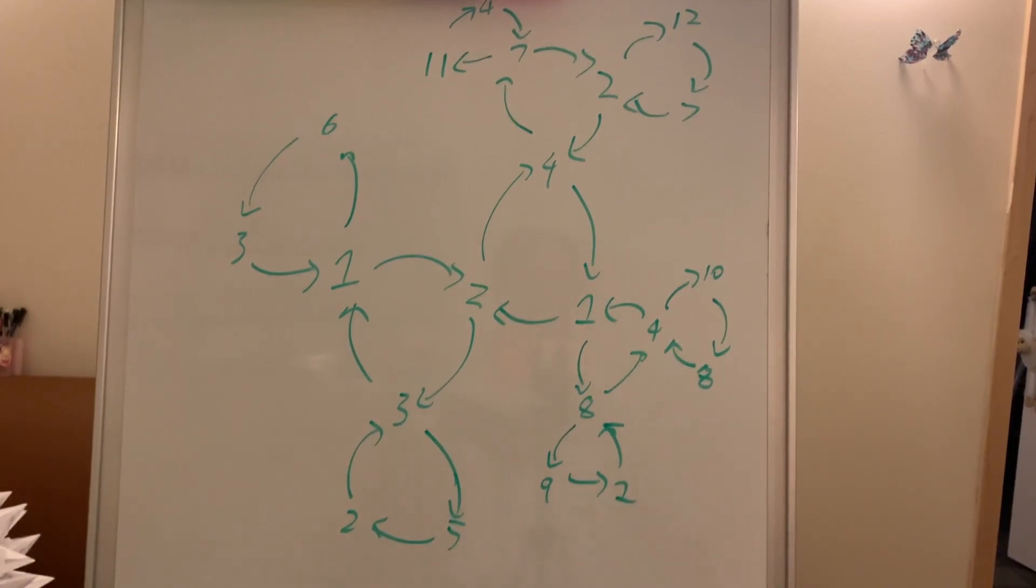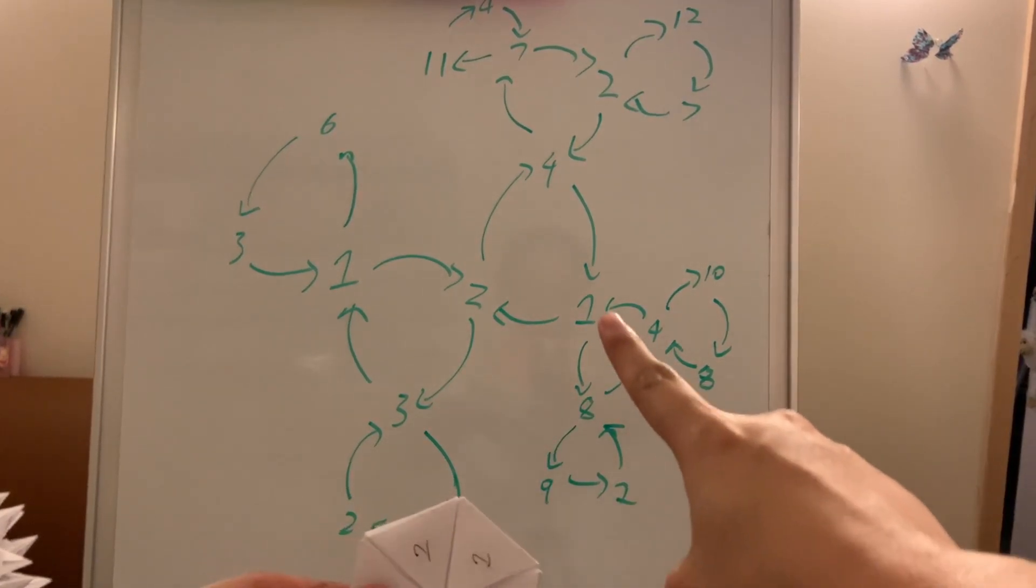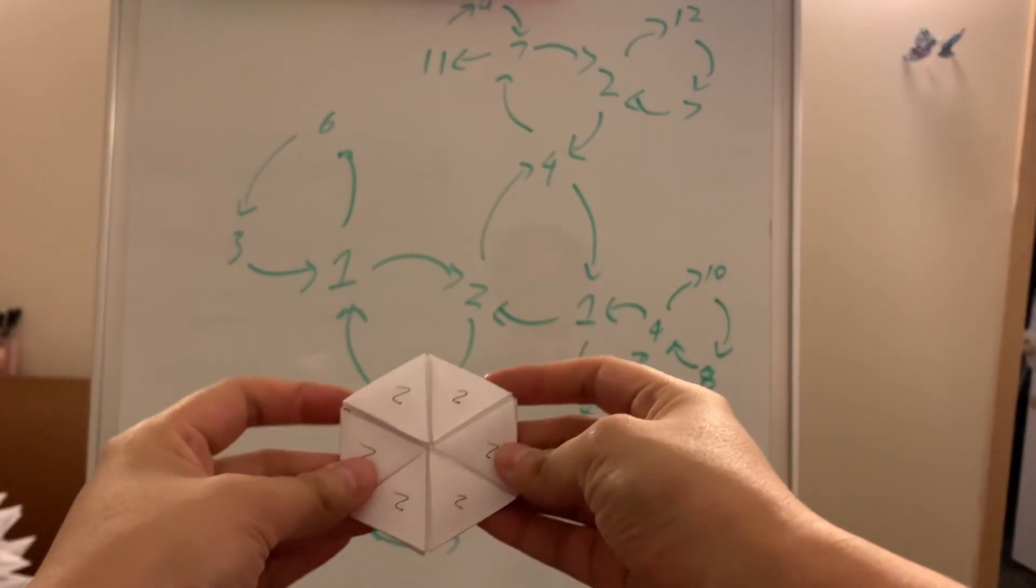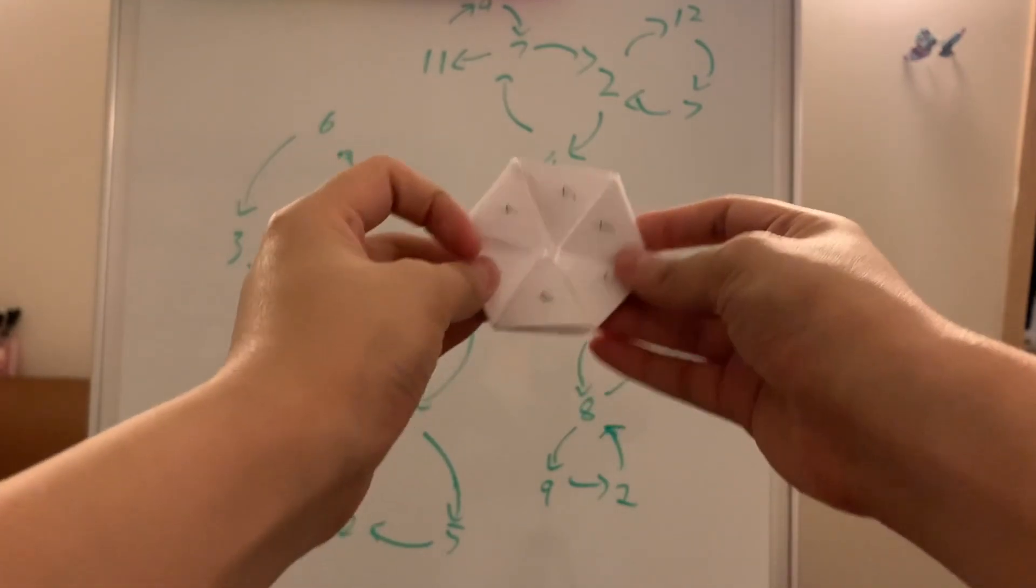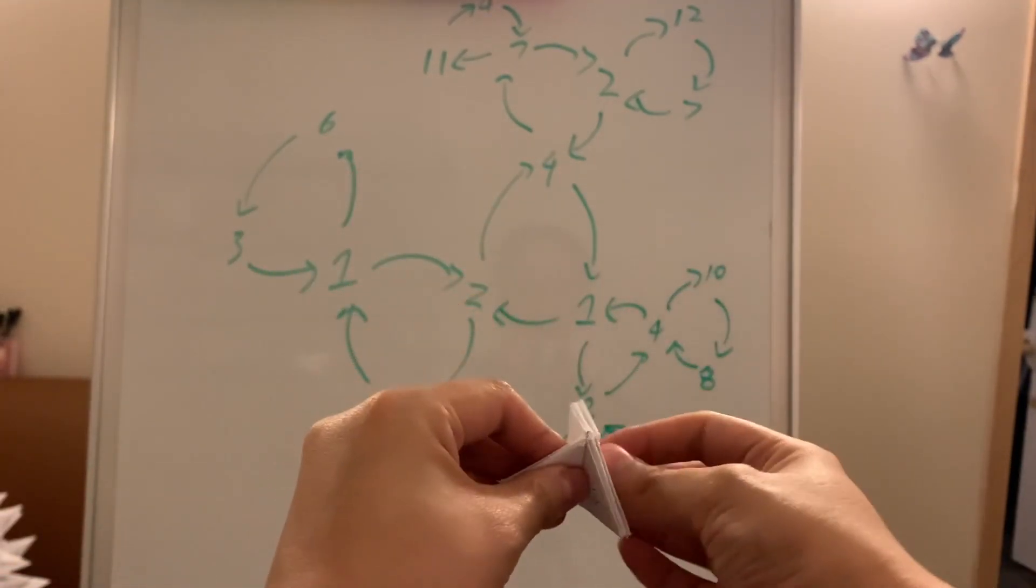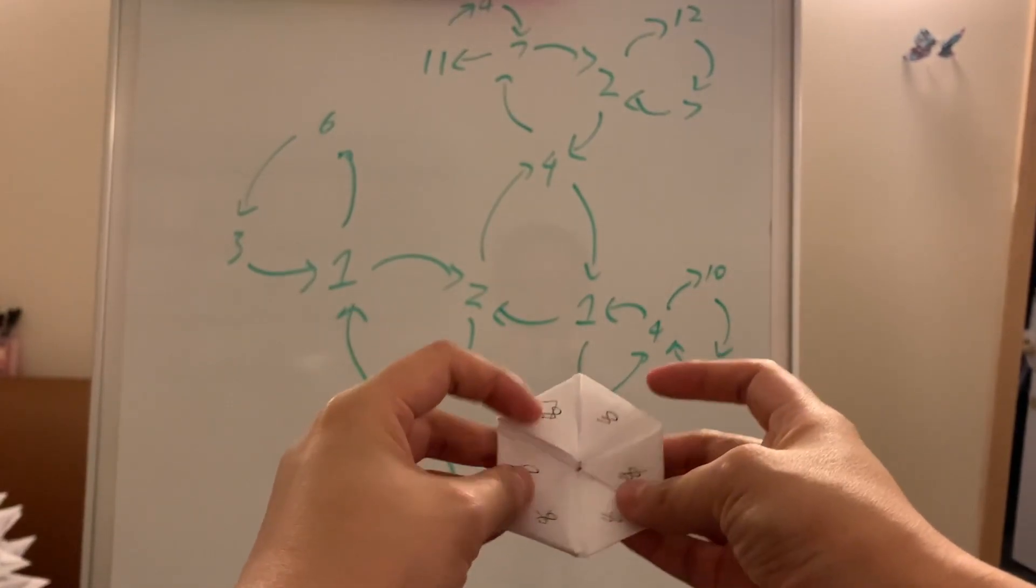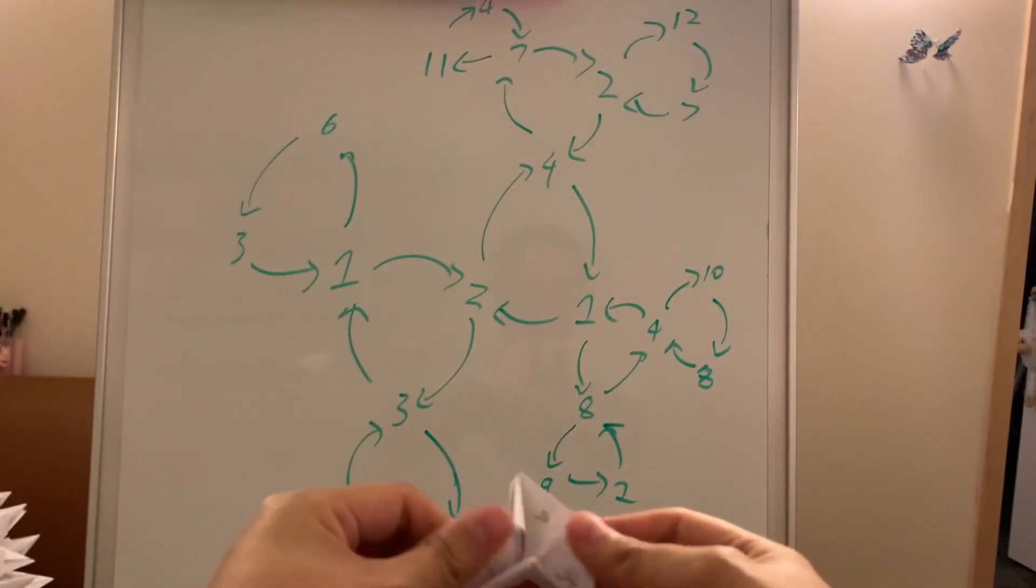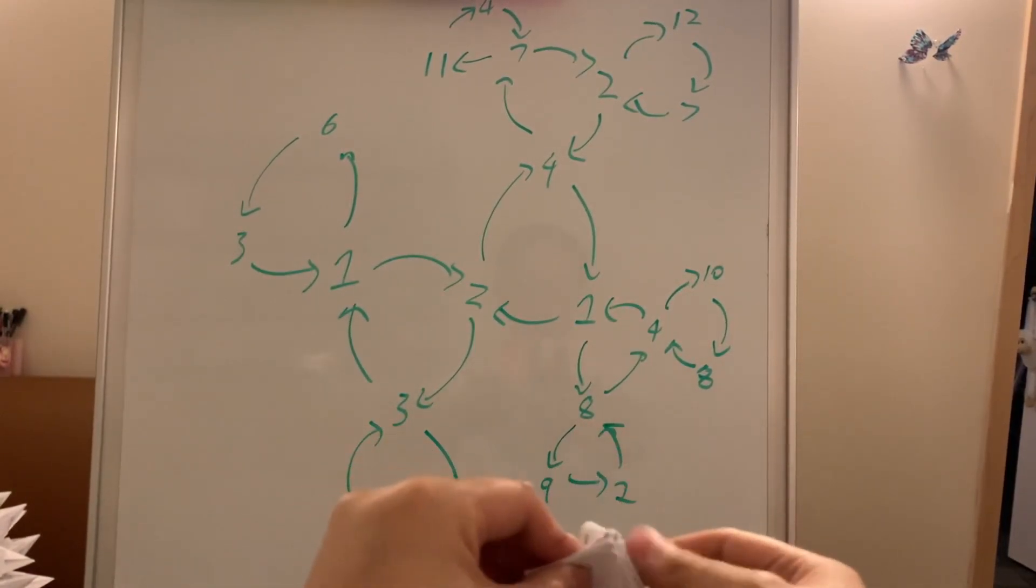So we start from one right there. We can switch over to two, then four, then one. And if we go the other direction on one, we can get to eight. And from eight, we can get down to nine.